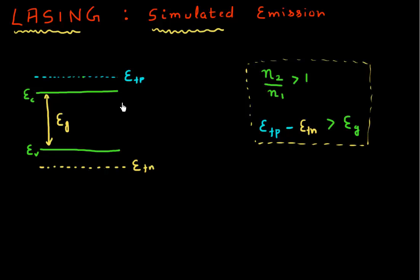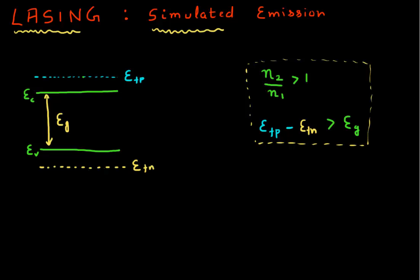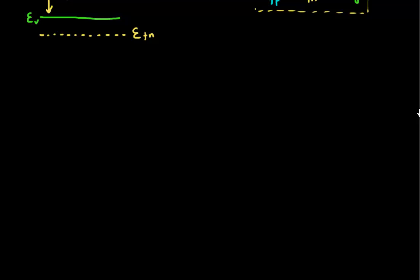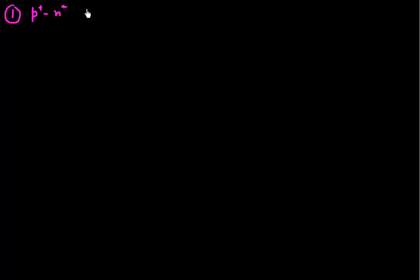So let me give you two examples of how we can achieve it. The first example is of a degenerately doped PN diode — a P-plus N diode. I want to see whether we can achieve population inversion, or the condition for stimulated emission to dominate. Let me first draw the band diagram for this at zero voltage bias.